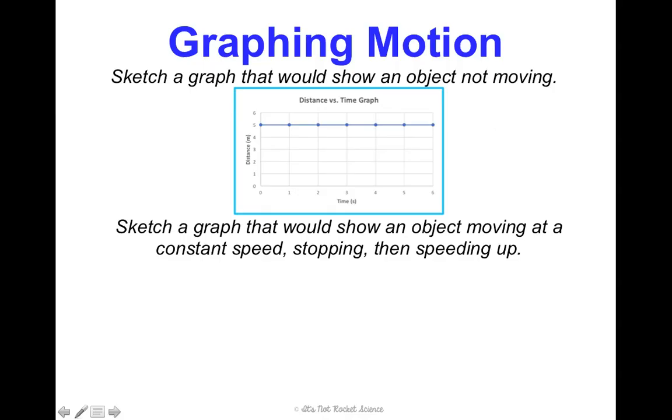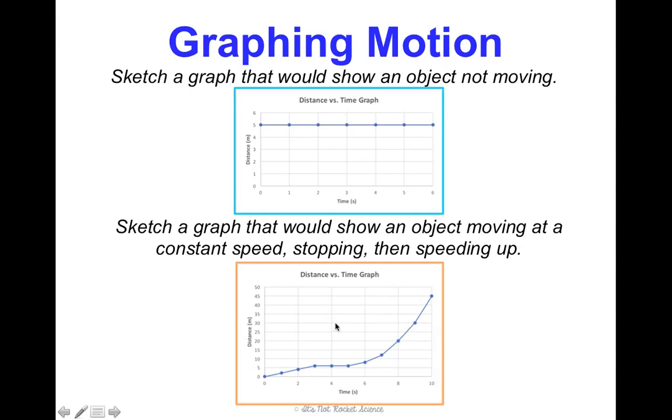Alright, another. Sketch a graph that would show an object moving at a constant speed and then stopping and then speeding up. That could look something like this. So, constant speed is a straight line. Stopping means it's a flat line. So, notice just above 5 meters here, we stopped for about 1-2 seconds. And then the line starts getting steeper, steeper, steeper, showing it's speeding up. So, again, there's my constant speed. There's my stopping. There's my speeding up.